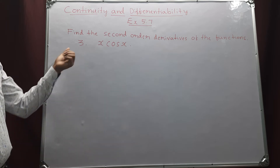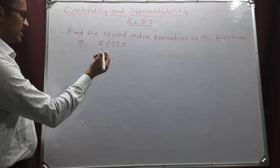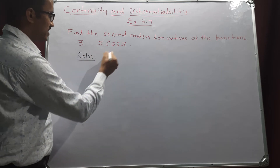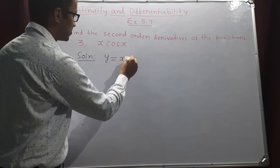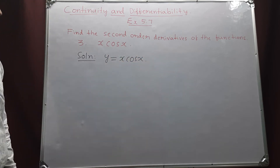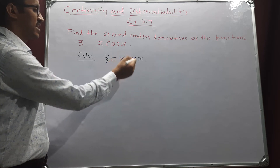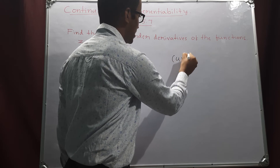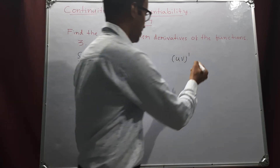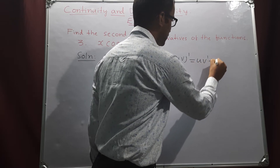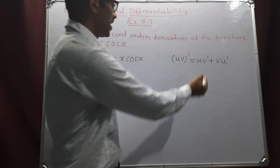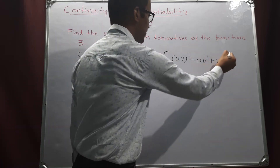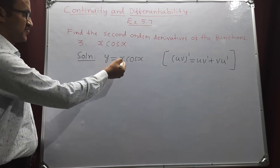Third question: x into cos x. We have to find the second order derivative. Let y equals x into cos x. In this problem there is a product of two functions, x and cos x. The derivative of a product of two functions u and v is given by u into v dash plus v into u dash — first function into derivative of second plus second function into derivative of first. We apply this formula to find the derivative of x into cos x.